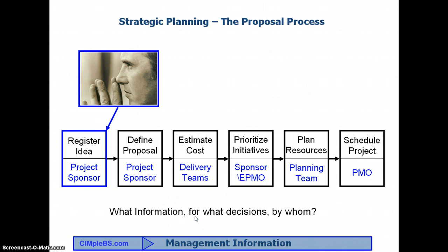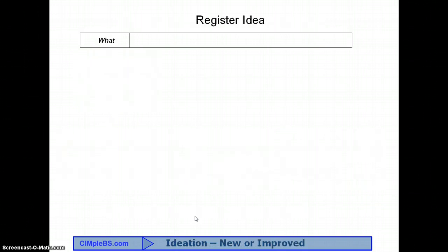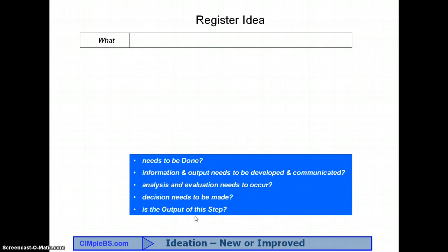We want to discuss the step with the person who draws benefits or uses the information from the step to make a decision to proceed with the idea or kill it in its tracks. We're going to discuss the step with the primary step stakeholder to determine five things. The first is the answer to the question, what? What needs to be done? What information and output needs to be developed and communicated? What analysis and evaluation needs to occur? What decision needs to be made?